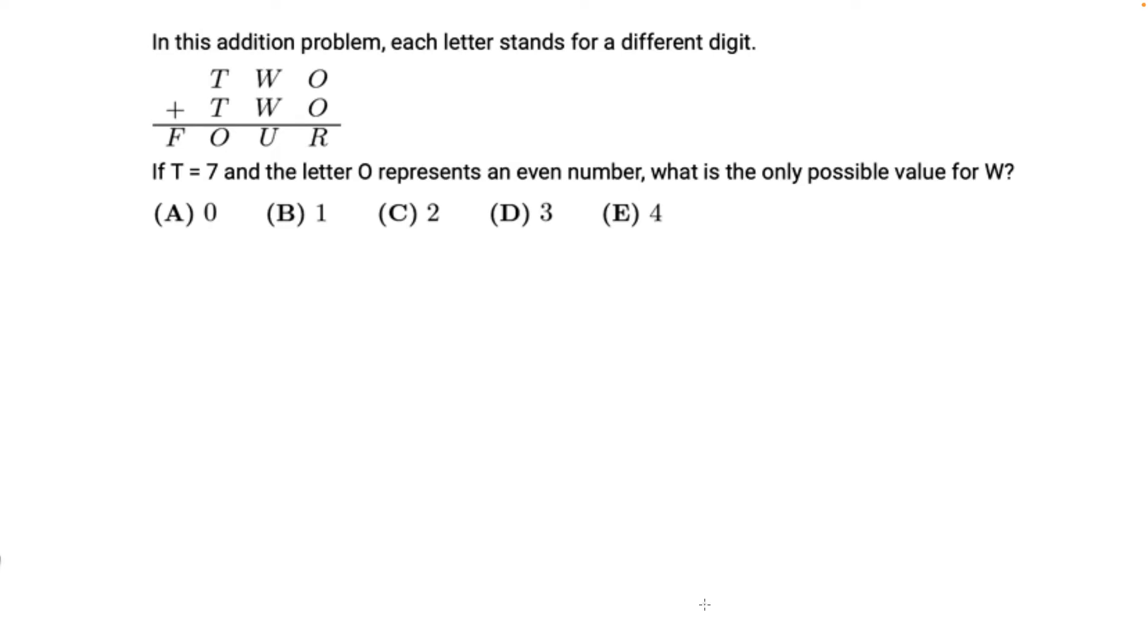In this addition problem, each letter stands for a different digit. If T equals 7 and the letter O represents an even number, what is the only possible value of W?